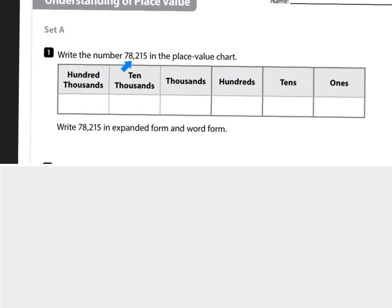Write the number 78,215 in the place value chart. We always start in our ones place, or units place, tens, hundreds, thousands, ten thousands, and hundred thousands. There is no hundred thousands here so we will not use this column. Let's write out our five for our ones place, our one in our tens place, our two in our hundreds place, our eight in our thousands place, and our seven in our ten thousands place.